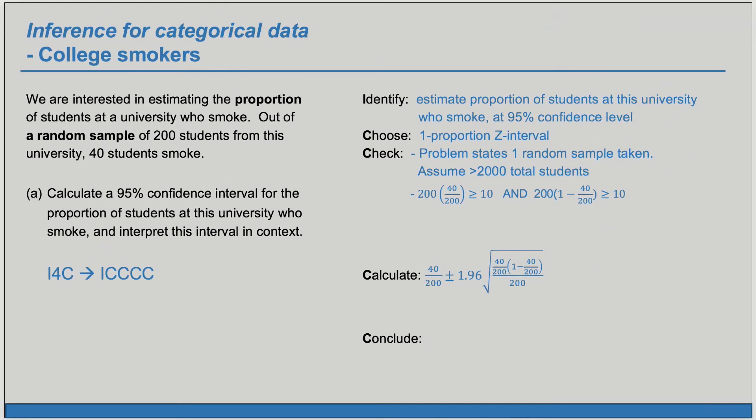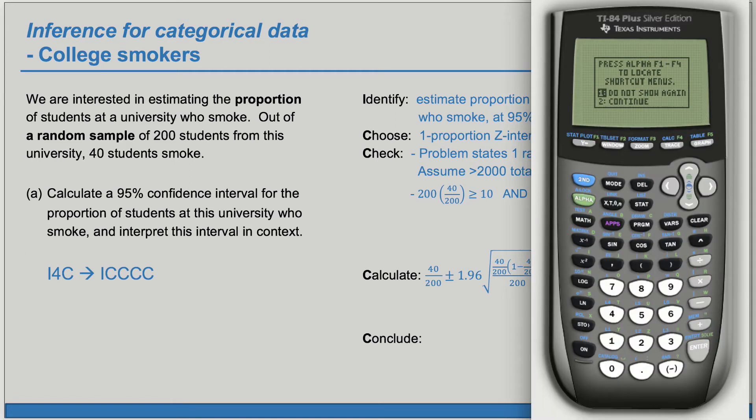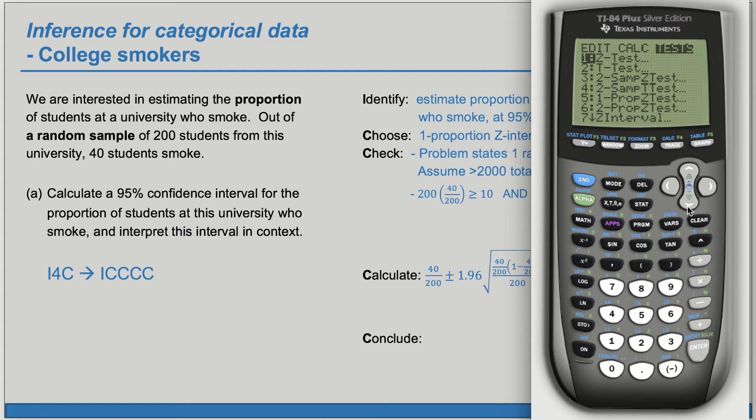Now we have the confidence interval and we can evaluate it. If you like you can use a calculator shortcut. I'm going to use a TI here, go to stat, over to tests. Because we have a single proportion and we're using a z confidence interval, I'm going to choose one prop z int. x is the number of successes. In this case there were 40 students who smoked in the sample, so x is 40 out of a sample size of 200.